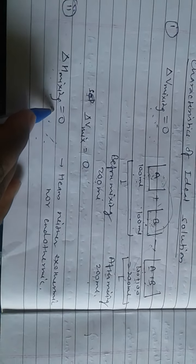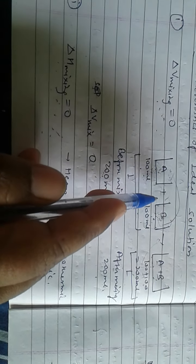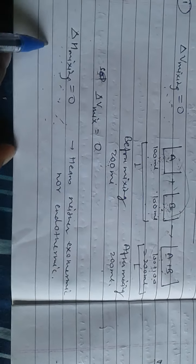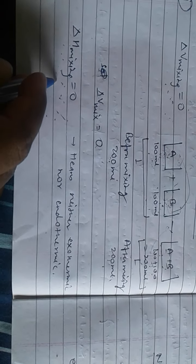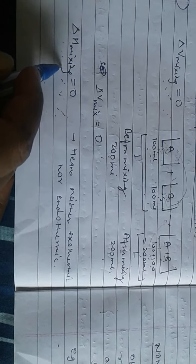Similarly, delta H mixing: the temperatures of A and B are the same before mixing, and after mixing the temperature is also the same. That means there is no change in enthalpy — delta H mixing is zero. This process is neither exothermic nor endothermic. If delta H is negative, it is exothermic; if delta H is positive, it is endothermic. But in an ideal solution, delta H mixing must be zero.